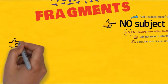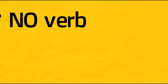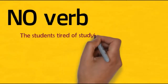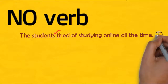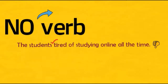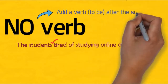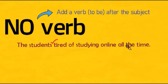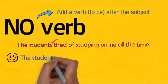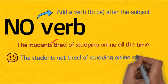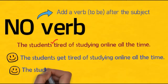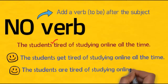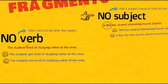The next type of fragment is missing a verb. This mostly happens when the sentence contains adjectives. You cannot place an adjective directly after the noun or subject without a verb — you need a linking verb. The correction is either adding an action verb or a linking verb 'to be.' In the first correction the verb 'get' is added, and in the second correction the linking verb 'are' is added before the adjective 'tired.'